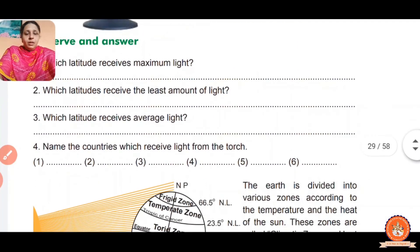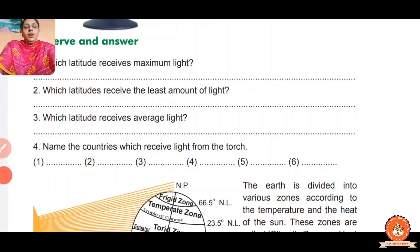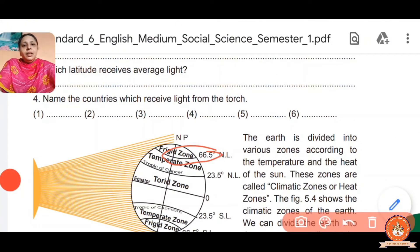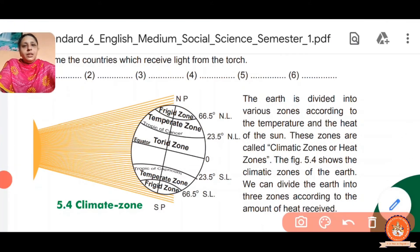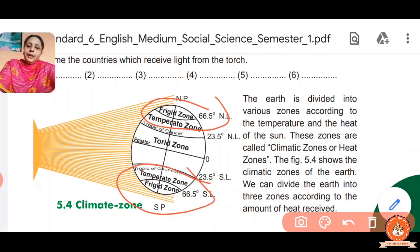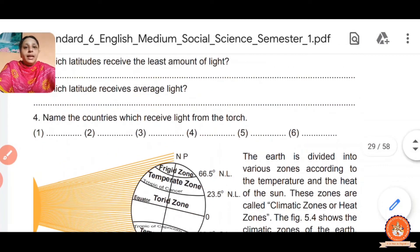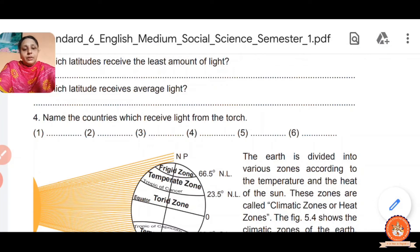Which latitude receives the least amount of light? That is 66.5 to 90 degrees north pole and between 66.5 to 90 degrees south pole. These zones are called the Freeze Zone. There is too much cold in these areas because minimum sunlight reaches those two places.